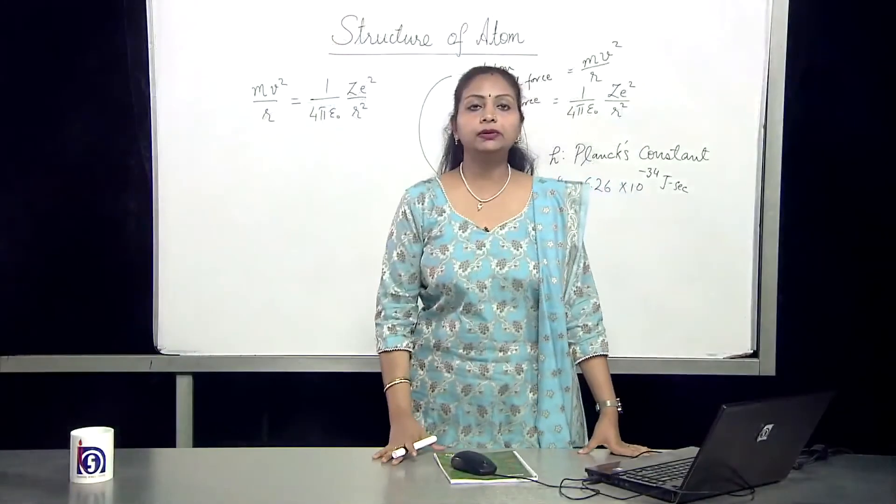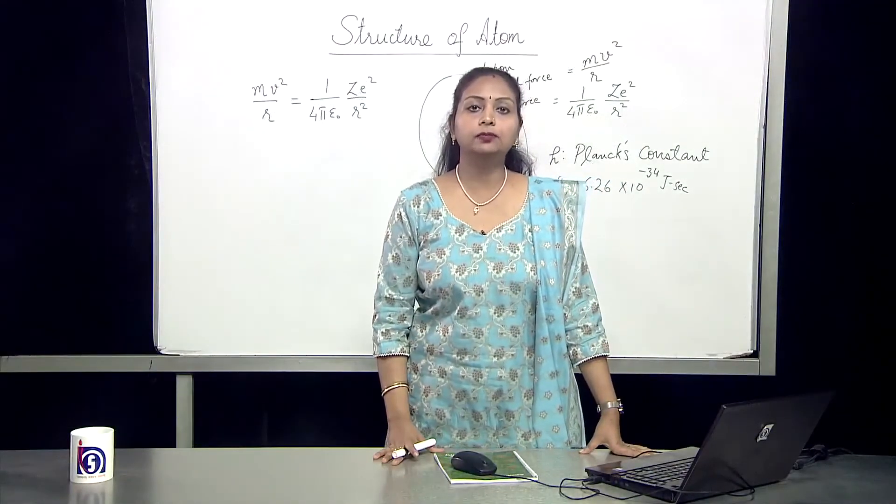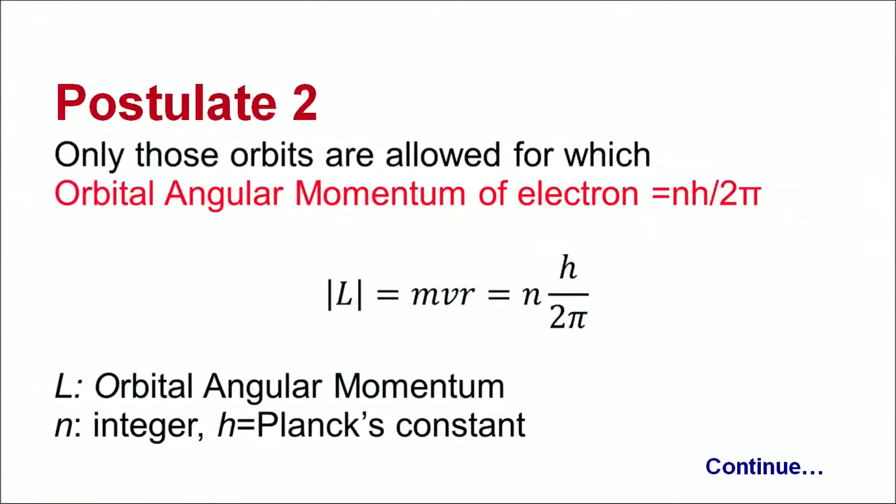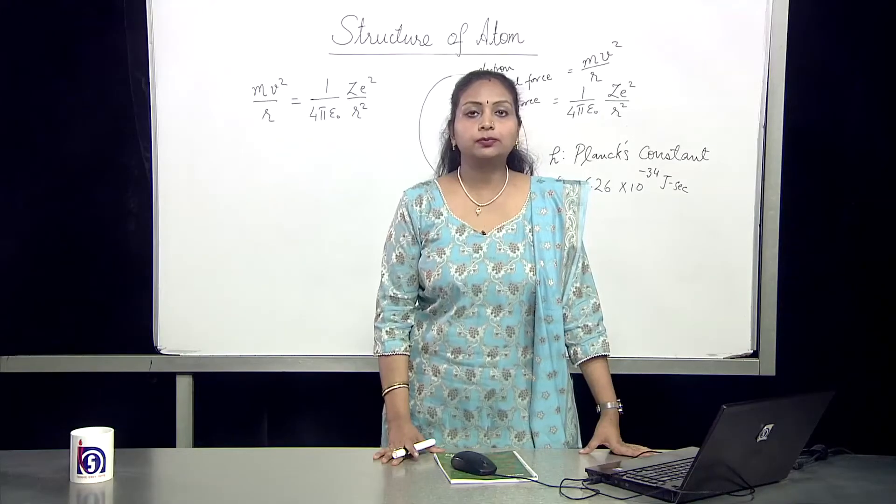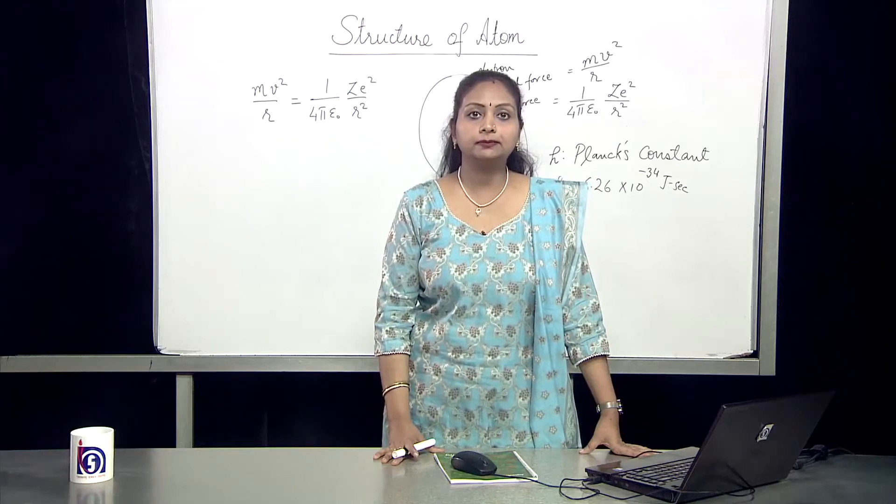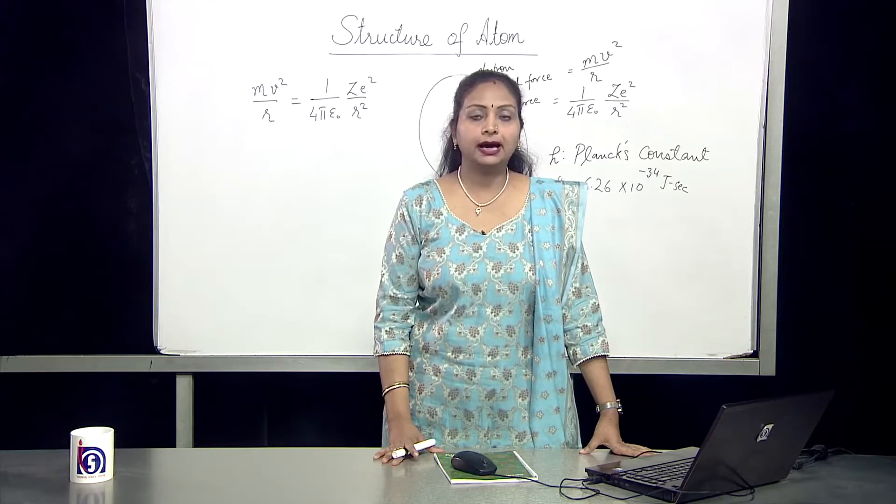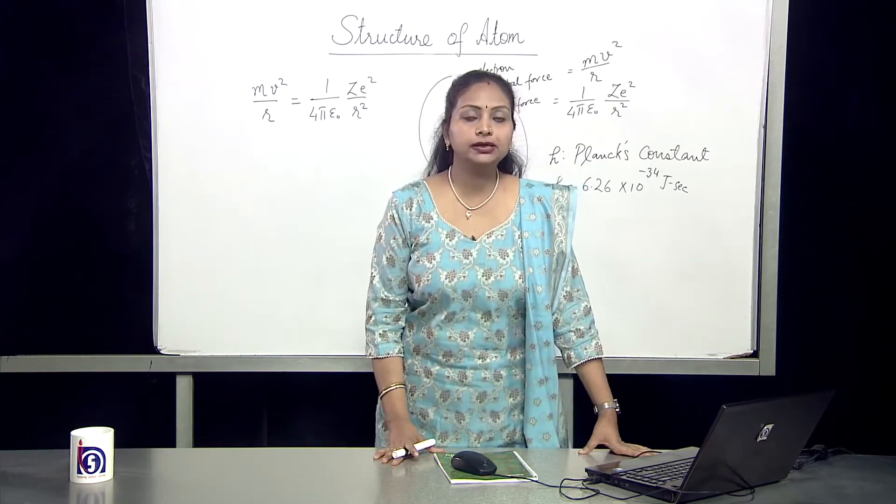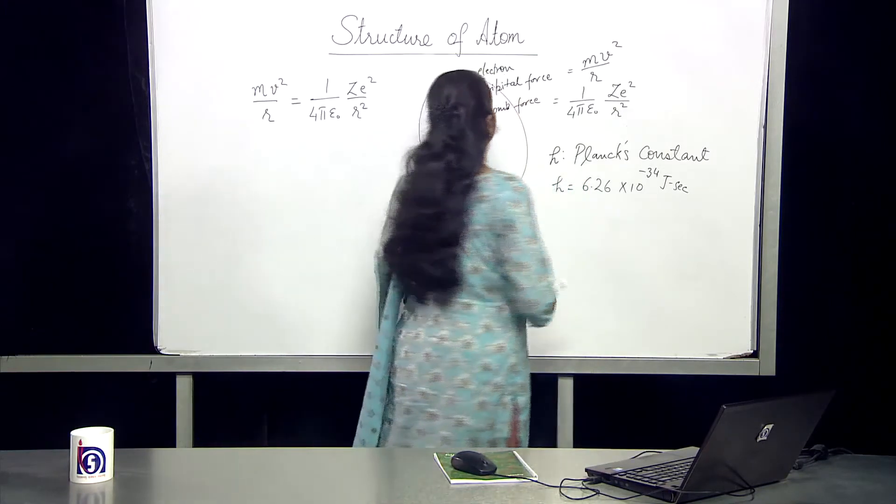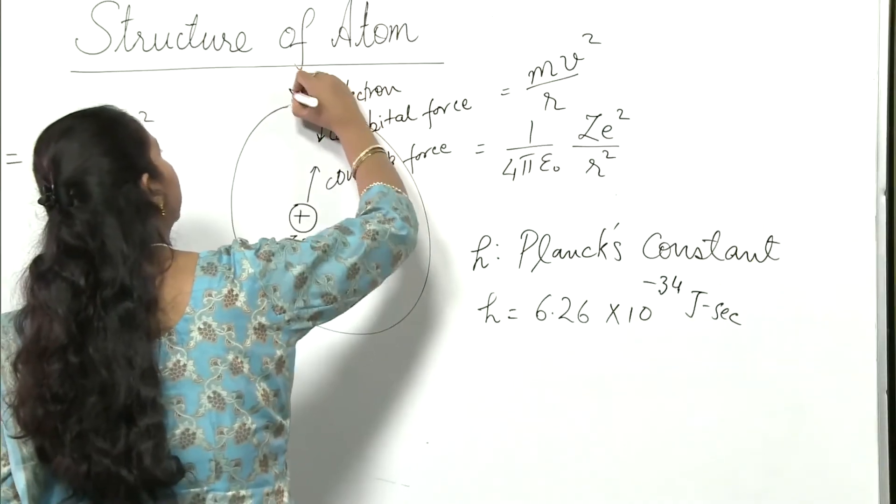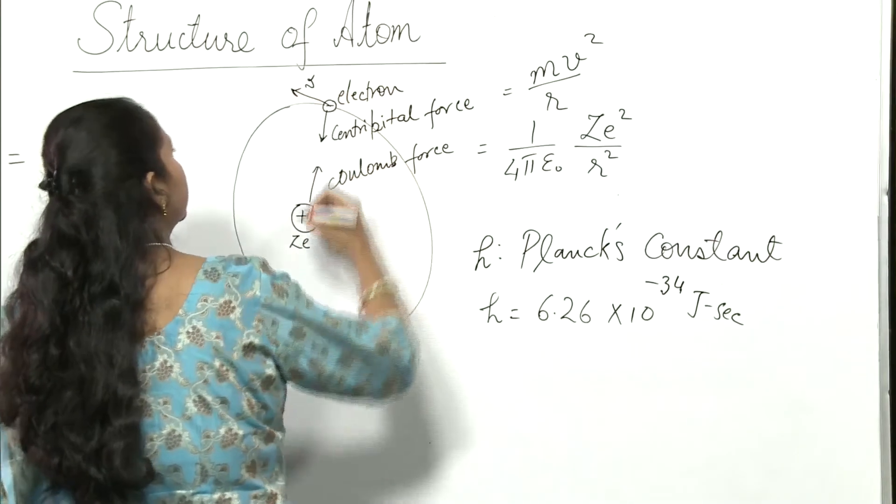Now what do we mean by orbital angular momentum of the electron? Since the electron is revolving round the nucleus, it will possess an angular momentum which is termed as orbital angular momentum and it will have a linear velocity which will be tangential to the orbit.